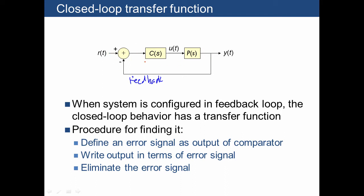The procedure for finding the closed-loop transfer function is to define a value for whatever comes out of our summing junction, which I'll call E, meaning error signal. The output E is going to be equal to R of S minus Y of S.